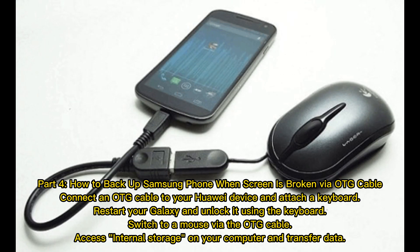Part 4: How to backup a Samsung phone when the screen is broken via OTG cable. Connect an OTG cable to your Samsung device and attach a keyboard. Restart your Galaxy and unlock it using the keyboard. Switch to a mouse via the OTG cable, then access internal storage on your computer and transfer data.